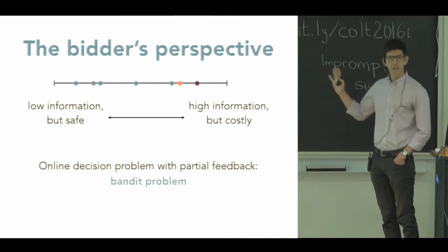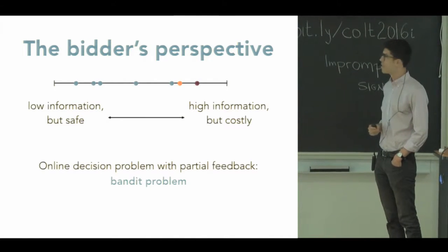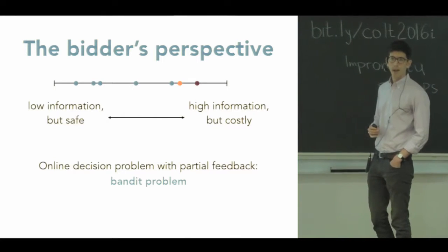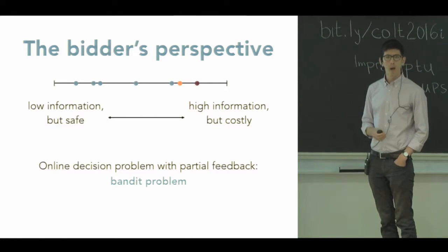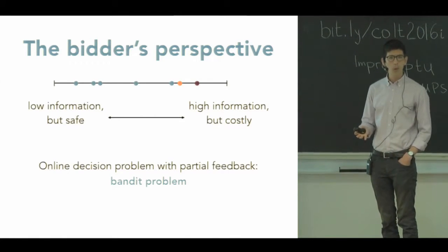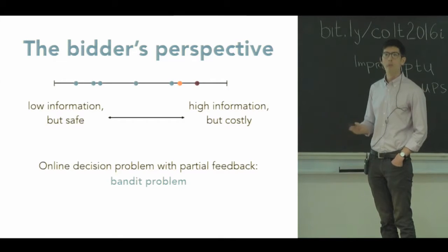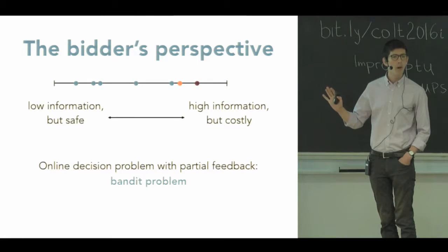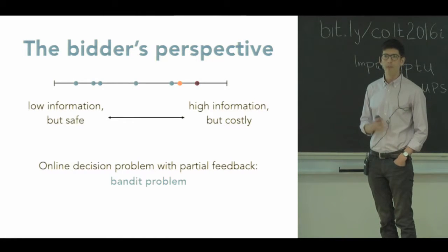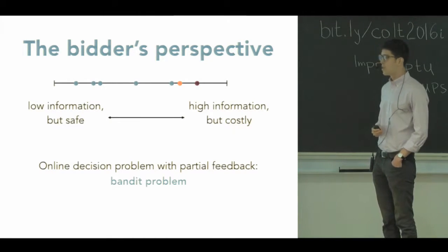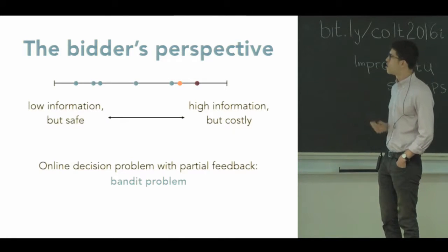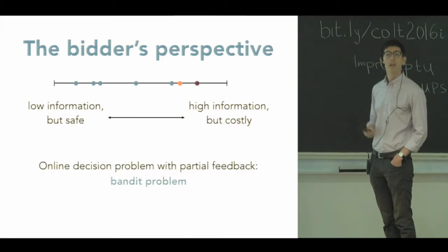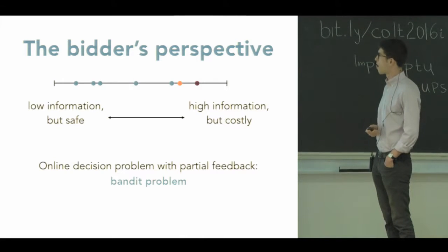So there's a nice tradeoff here. This is a tradeoff that's familiar to everyone at this conference. If I bid high, I'm more likely to win the item and more likely to get information about how much it's worth. But that's also potentially quite costly for me because I might overpay for an item that I didn't actually want. On the other hand, it's safer perhaps to bid lower, but then I don't get information about what the true value of the item is. So we have a sort of exploitation-exploration tradeoff, and we have partial feedback. It sounds like a bandit problem, and that's how we're going to try to model this problem.